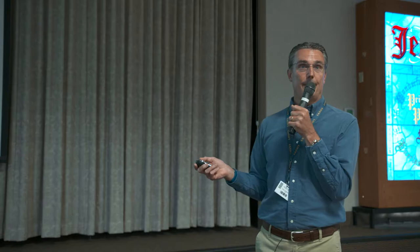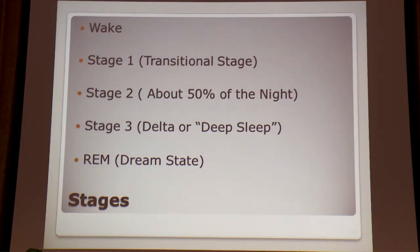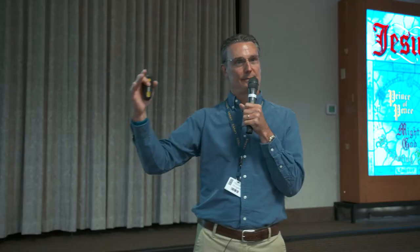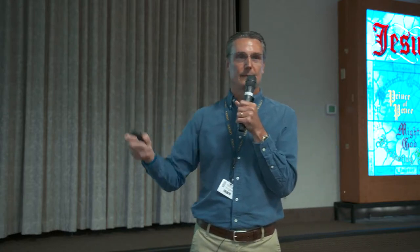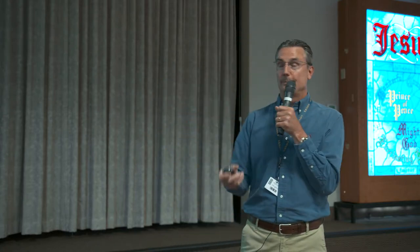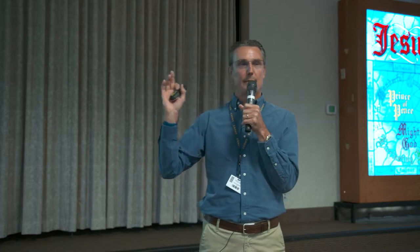The sleep stages: Stage one is a transitional stage from wakefulness to sleep — you might get one to seven minutes, maybe less. Stage two is about half the night. Stage three is delta sleep, or your deep sleep — that's like when you have a 10-year-old in the back seat of a car who falls asleep and you can carry them into bed and they won't remember a thing.